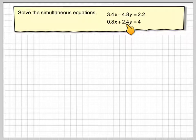So we've got 3.4x minus 4.8y equals 2.2, and 0.8x plus 2.4y equals 4.